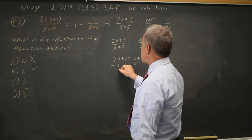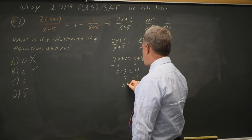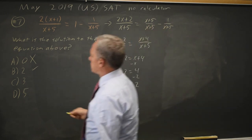Subtract x from both sides. x plus 2 equals 4. Subtract 2 from both sides. x equals 2. Same answer I found before.